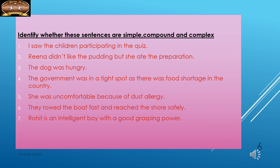Exercise: 'I saw the children participating in the quiz' — simple sentence, only one finite verb, no conjunction. 'Reena did not like the pudding but she ate the preparation' — compound sentence, two thoughts connected by coordinating conjunction 'but.' 'The dog was hungry' — simple sentence, one finite verb. 'The government was in a tight spot as there was food shortage in the country' — complex sentence, with subordinating conjunction 'as.'